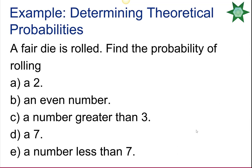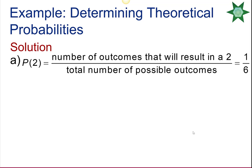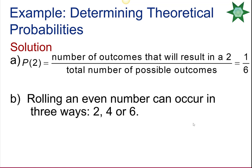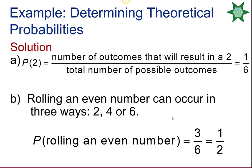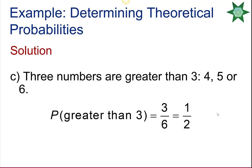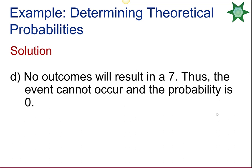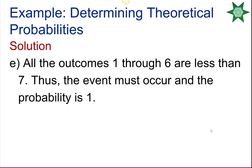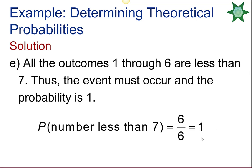Rolling a fair die, we find several probabilities. The probability of rolling a 2 is 1 out of 6, since there's only one outcome that results in a 2. The probability of rolling an even number is 3 over 6, or 1/2 (outcomes 2, 4, or 6). The probability of a number greater than 3 is also 3 over 6 = 1/2 (outcomes 4, 5, or 6). The probability of rolling a 7 is 0 (impossible), and the probability of an outcome less than 7 is 6 over 6, or 1.